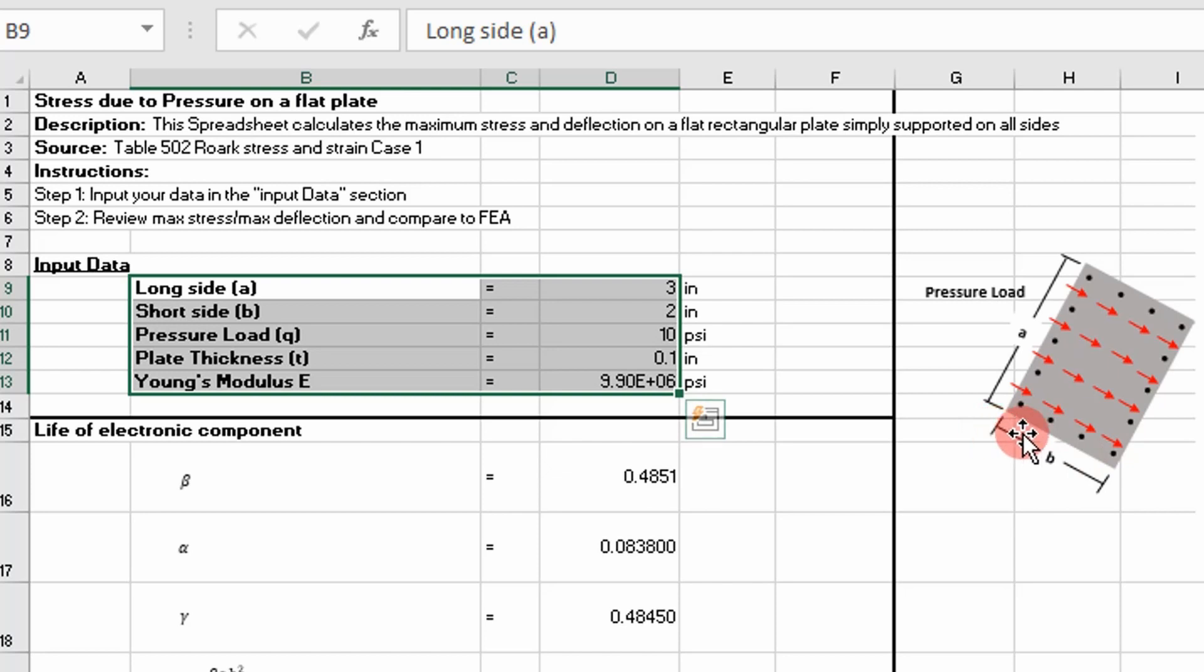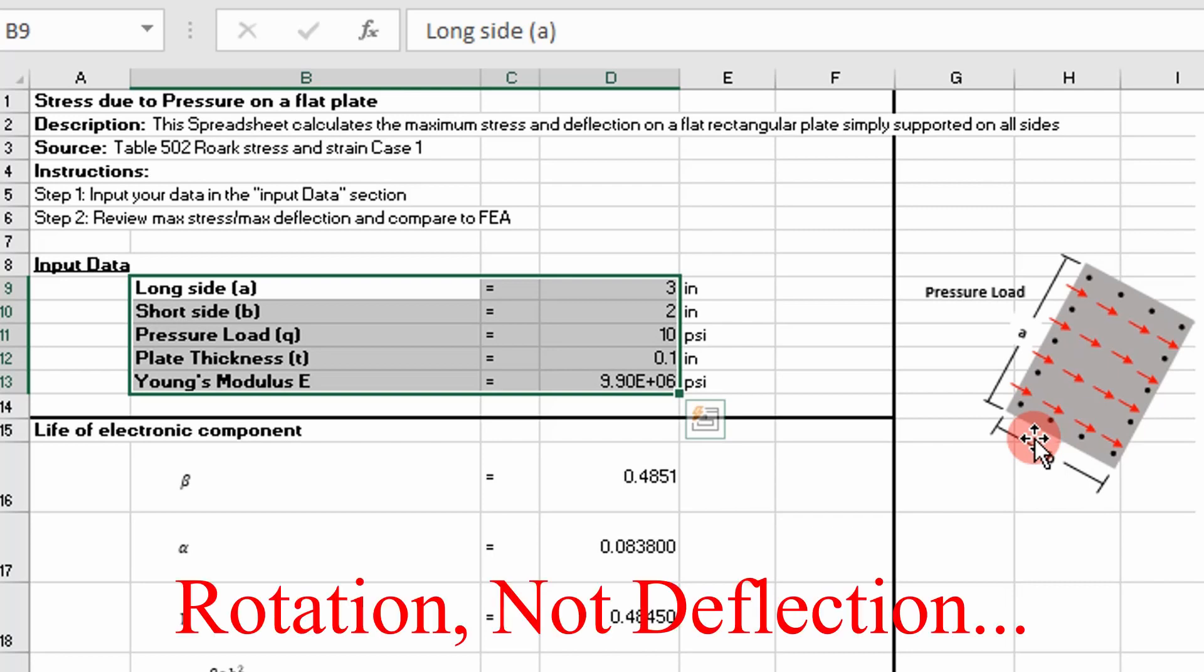And what do we mean by simply supported? So in industry, simply supported basically means that it does not transfer moments. So if we think of like rivets and fasteners, there's going to be some amount of slip or deflection when you put a load on the plate. Therefore, it may just be minor deflection at its ends, but there is going to be some slip and deflection. So we consider that simply supported.